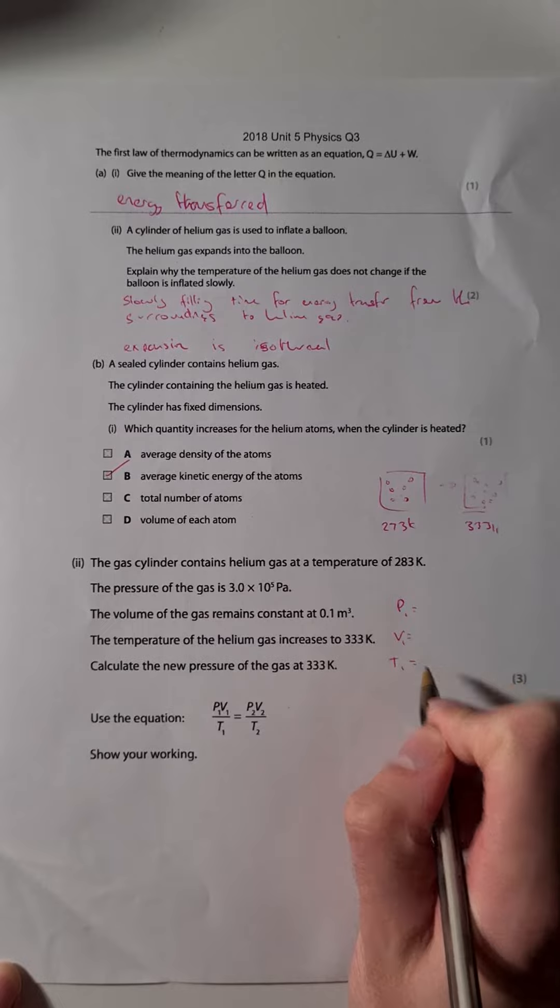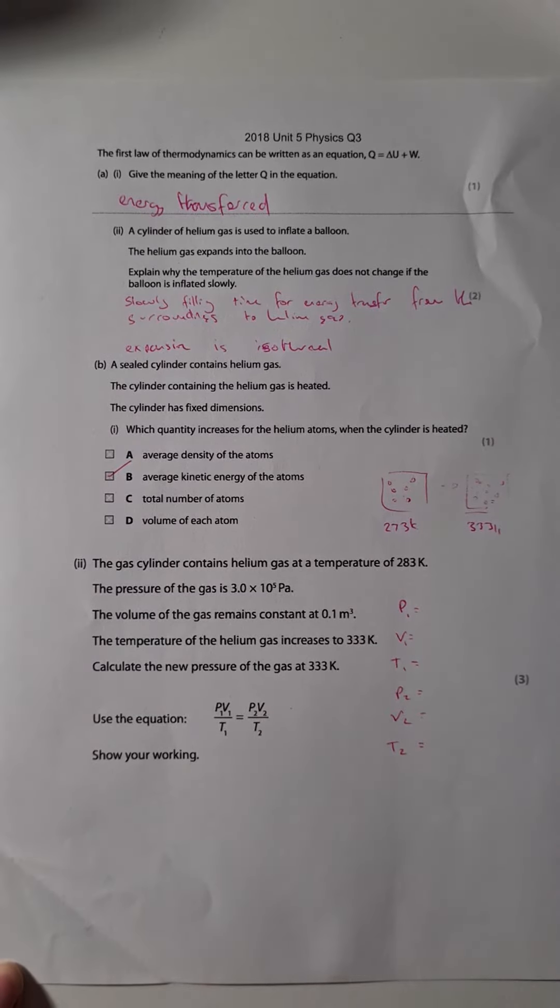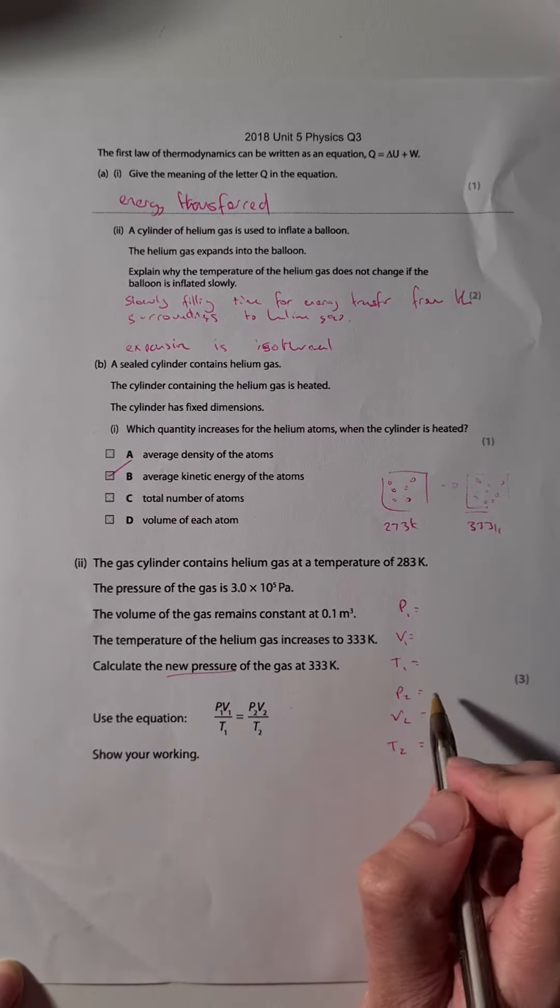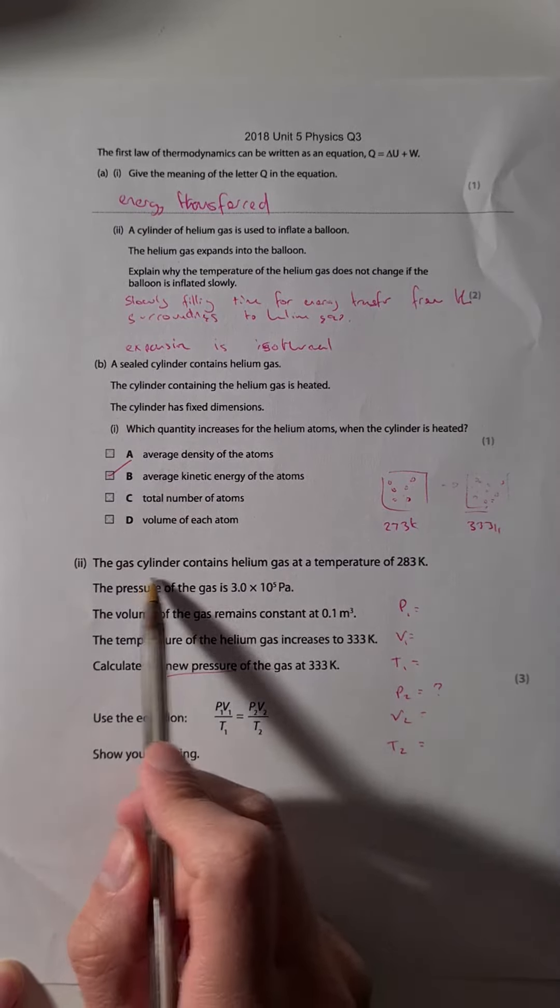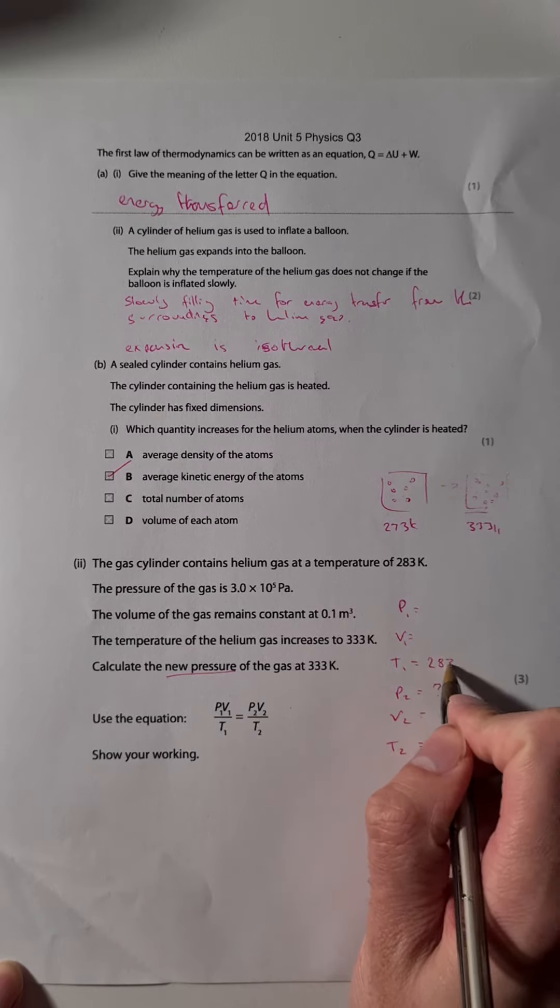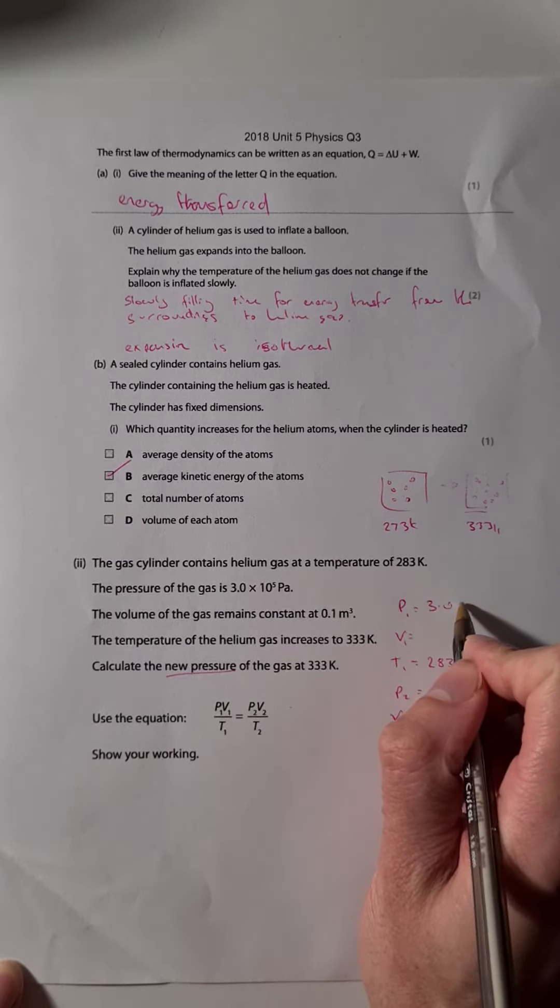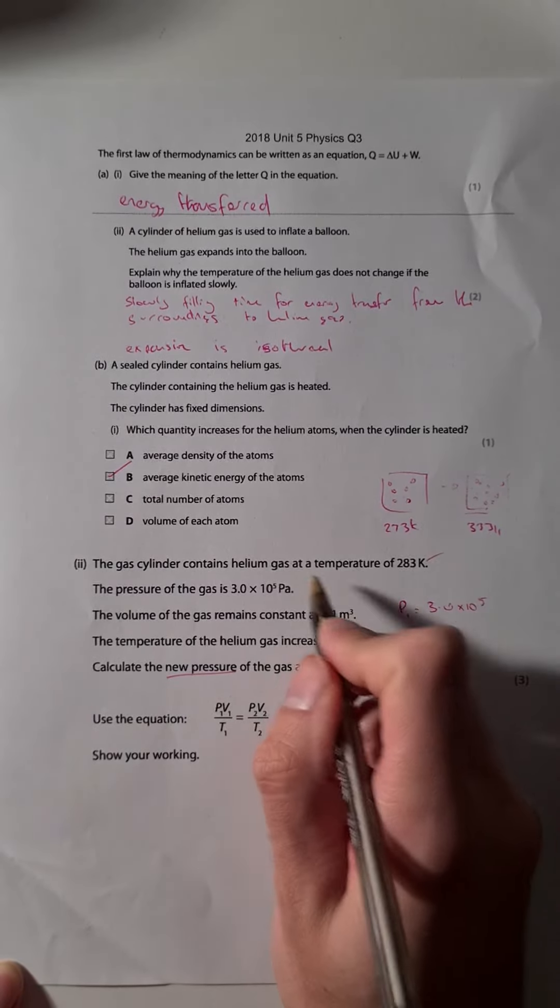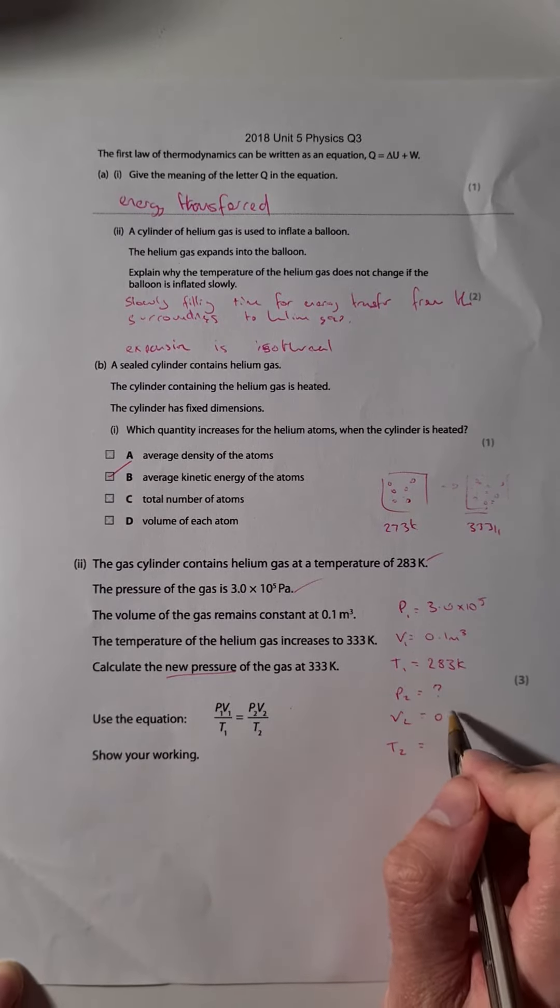What I would do here, I've got lots of info, is identify what each of these means for my equation down here. So I've got P1 V1 over T1 equals P2 V2 over T2. We'll go for each one and try to work out where it goes. I'm looking to calculate the new pressure, so that's going to be P2, the second pressure. The gas cylinder contains helium at a temperature of 283 Kelvin, so that's my temperature one, T1 equals 283 Kelvin. The pressure of the gas is 3 times 10 to the 5, so that's my original pressure P1 equals 3 times 10 to the 5.